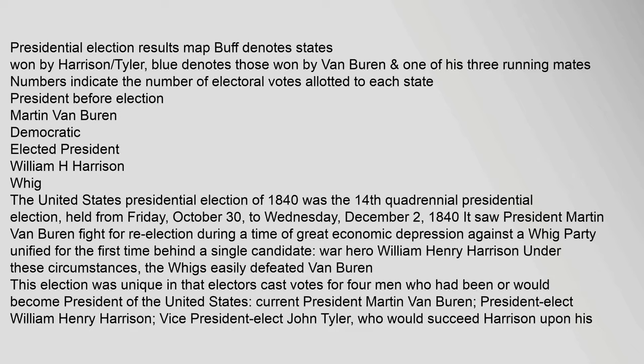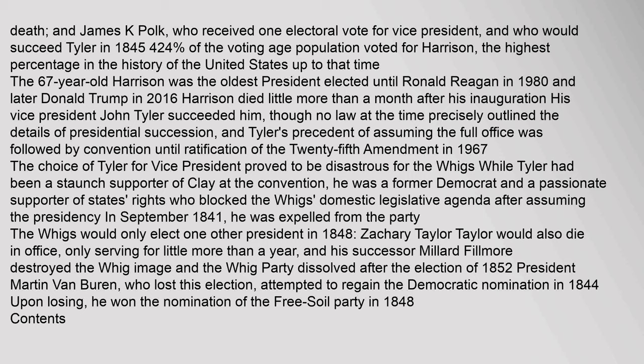Presidential election results map: buff denotes states won by Harrison and Tyler, blue denotes those won by Van Buren and James K. Polk, who received one electoral vote for vice president and would succeed Tyler in 1845. 42.4% of the voting age population voted for Harrison, the highest percentage in U.S. history up to that time. The 67-year-old Harrison was the oldest president elected until Ronald Reagan in 1980 and later Donald Trump in 2016. Harrison died little more than a month after his inauguration. His vice president John Tyler succeeded him, though no law at the time precisely outlined presidential succession, and Tyler's precedent of assuming the full office was followed by convention until ratification of the 25th Amendment in 1967.